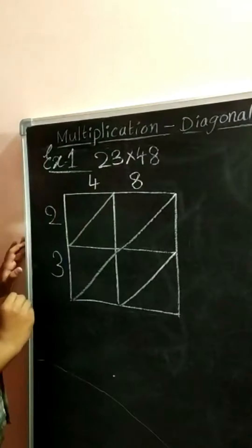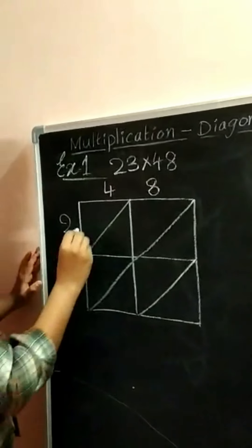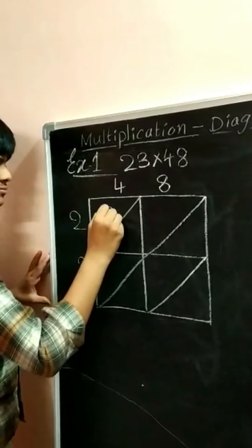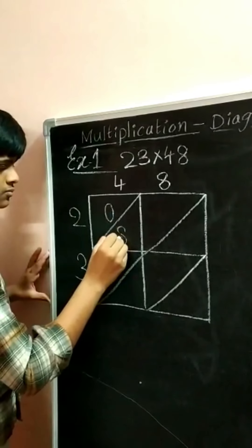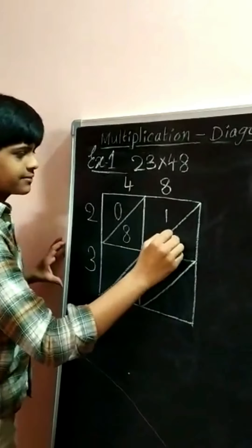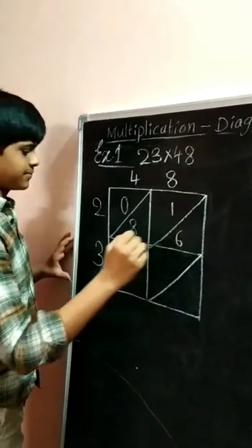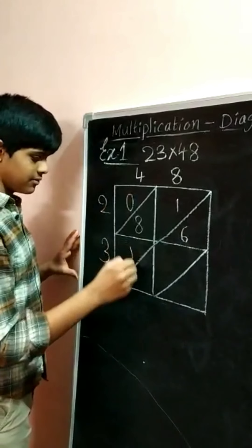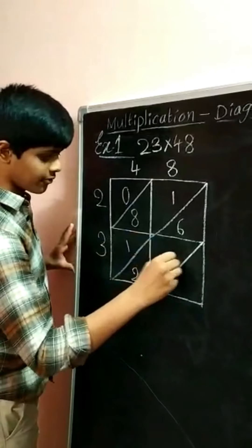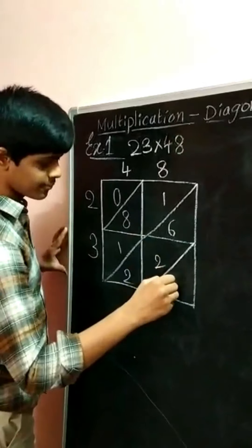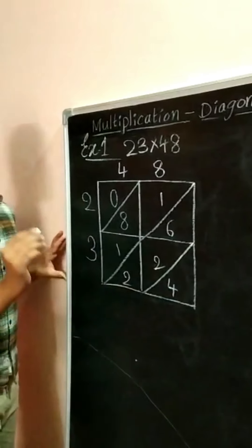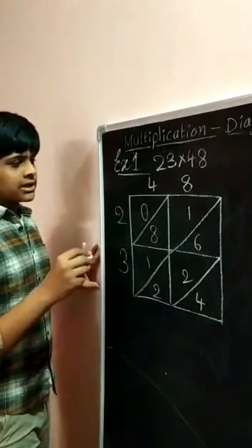Find the product row-wise and fill each and every row diagonal-wise. 2×4 = 8; 8 is a single digit number, so keep 08. 2×8 = 16. 3×4 = 12. 3×8 = 24. In the first diagonal, only 4 is there.